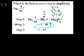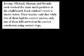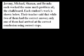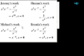Next question. This is problem 48. Jeremy, Michael, Shannon, and Brenda each worked the same math problem at the chalkboard. Each student's work is shown below. Their teacher said that while two of them had the correct answer, only one of them had arrived at the correct conclusion using correct steps. They want to know which is the completely correct solution.